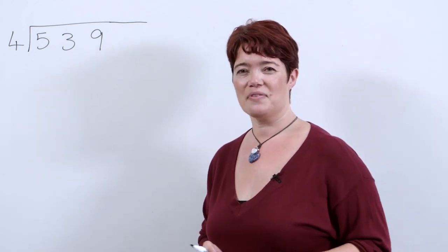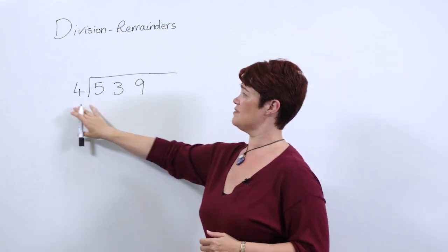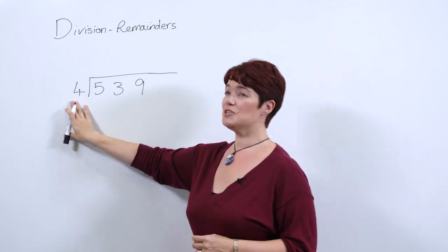So let's get ourselves a remainder. We've got the division on the board: 539 divided by 4. I know it's going to have a remainder because this is an odd number and we're sharing it by 4.